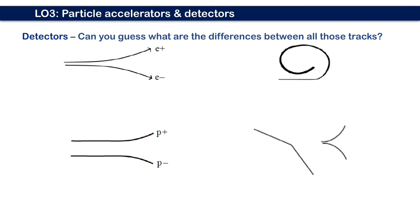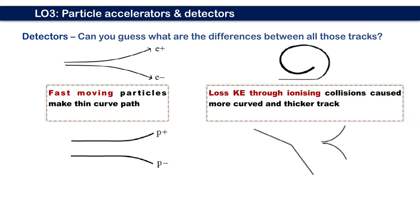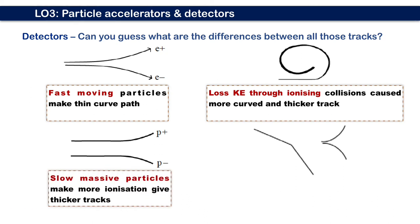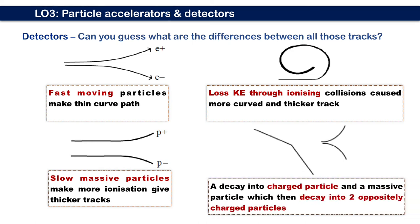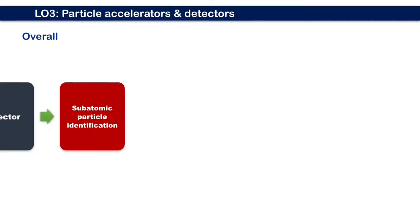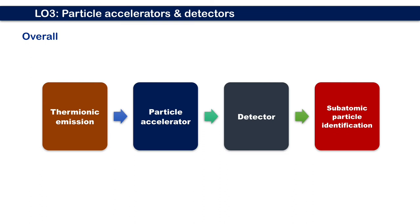Can you guess what are the differences between all those tracks? The first path shows fast moving particles make thin curved paths. The second path shows particles that lost kinetic energy through ionizing collisions, shown by small curve and thicker track. The third track shows slow massive particles make more ionization, giving thicker tracks. It was shown by a proton and anti-proton. And the last track shows decay into charged particles and a massive particle which then decays into two oppositely charged particles.